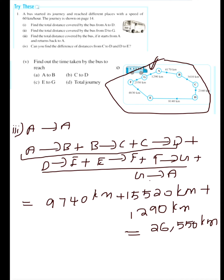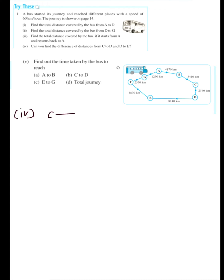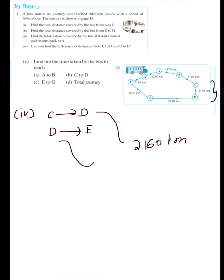Now let's discuss the fourth question: can you find the difference of distances from C to D and D to E? First find the distance from C to D, then find D to E, and subtract. The distance from C to D is 2160 km.